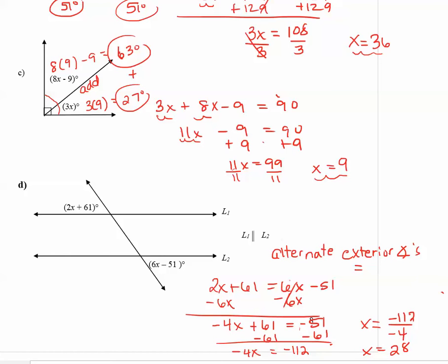So plugging in 28 in for x gives us 2 times 28 plus 61 and that's the equivalent to 117 degrees. My other expression was 6 times x minus 51. So 6 times 28 minus 51 and that is equal to also 117. Again, this lets you just confirm that you did get your solution x correct.